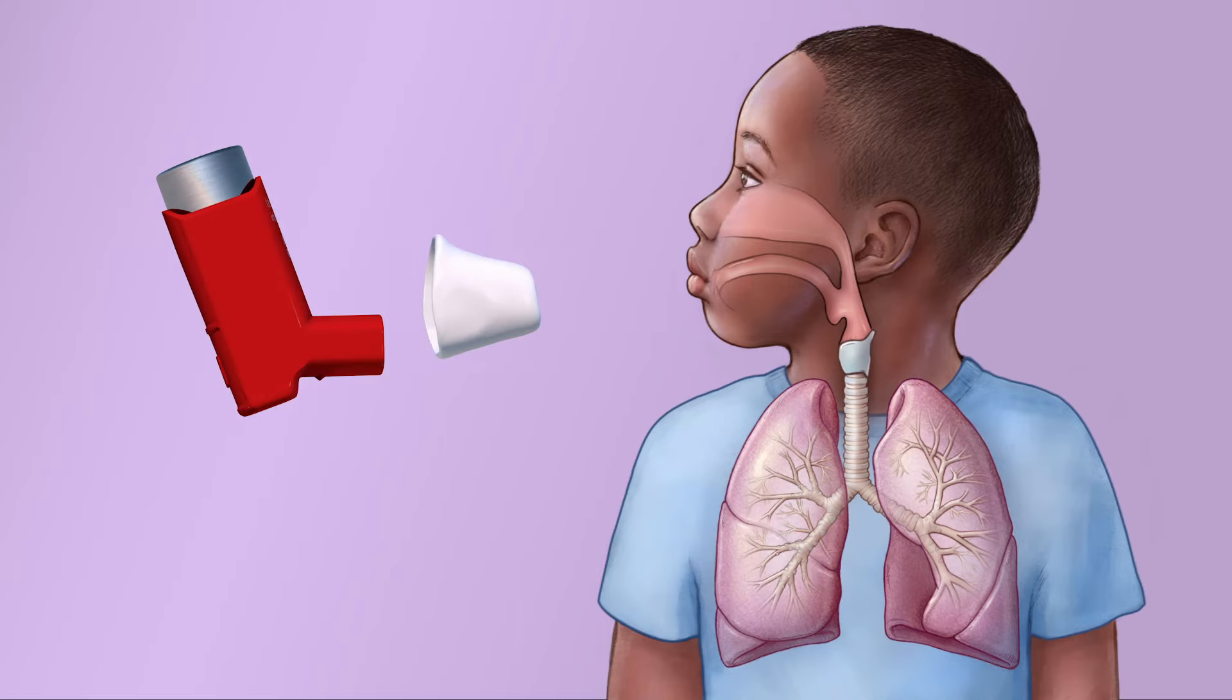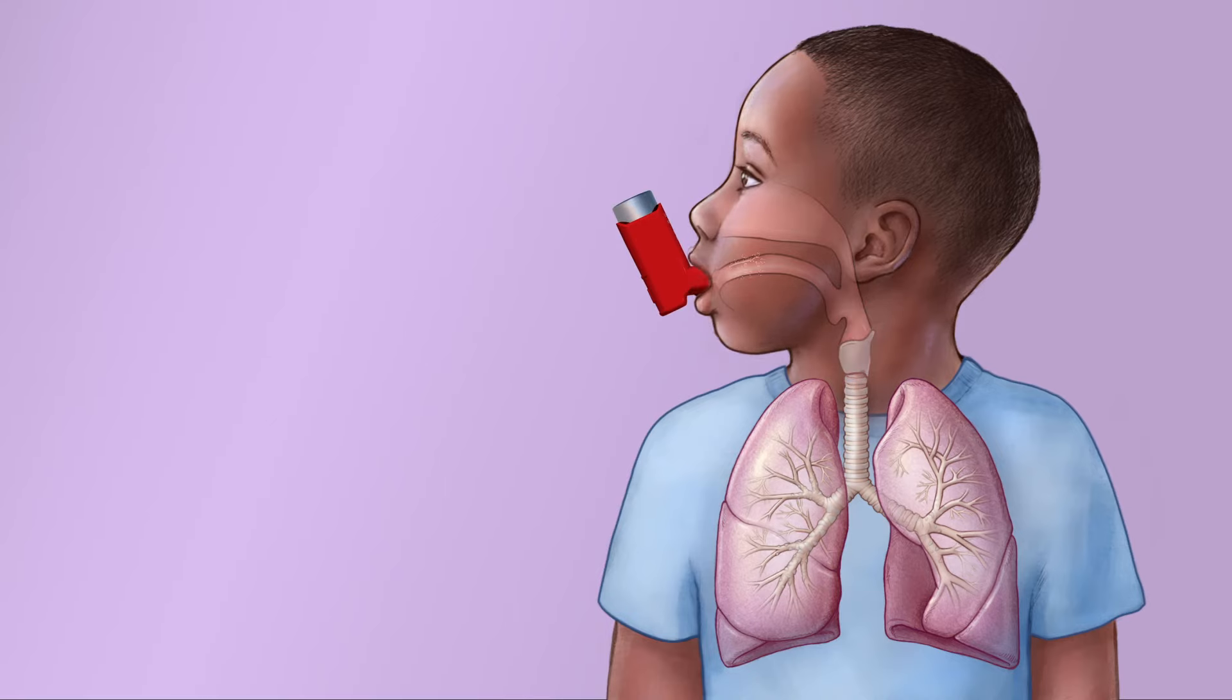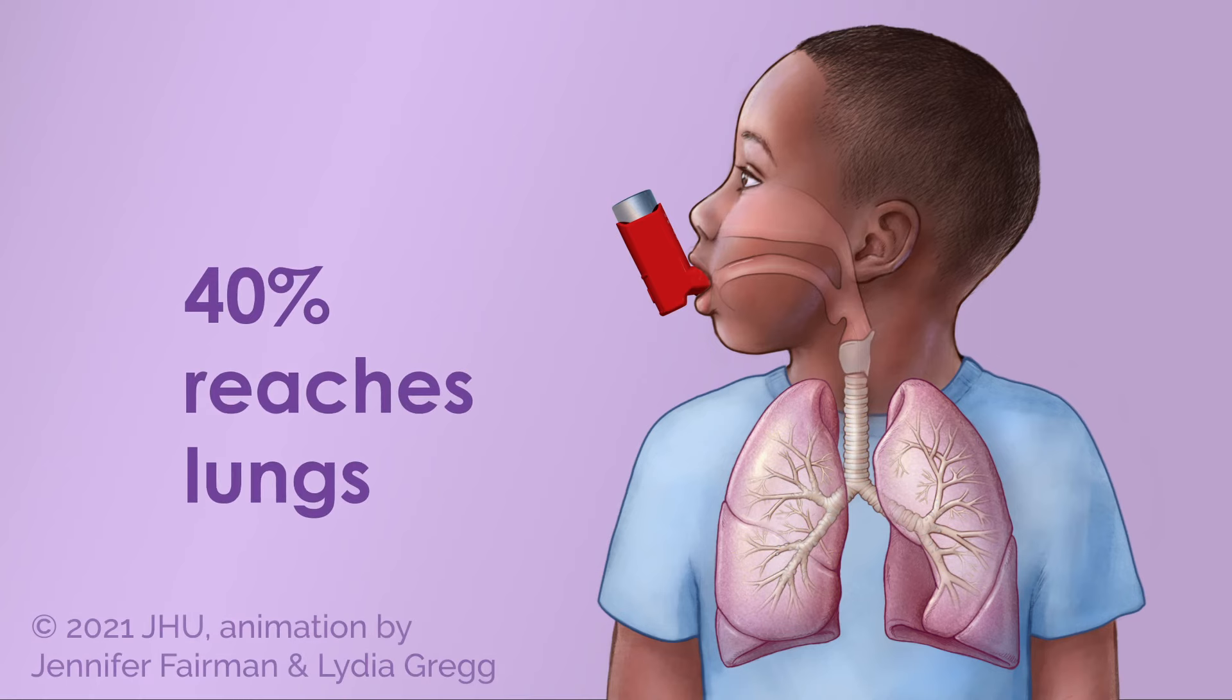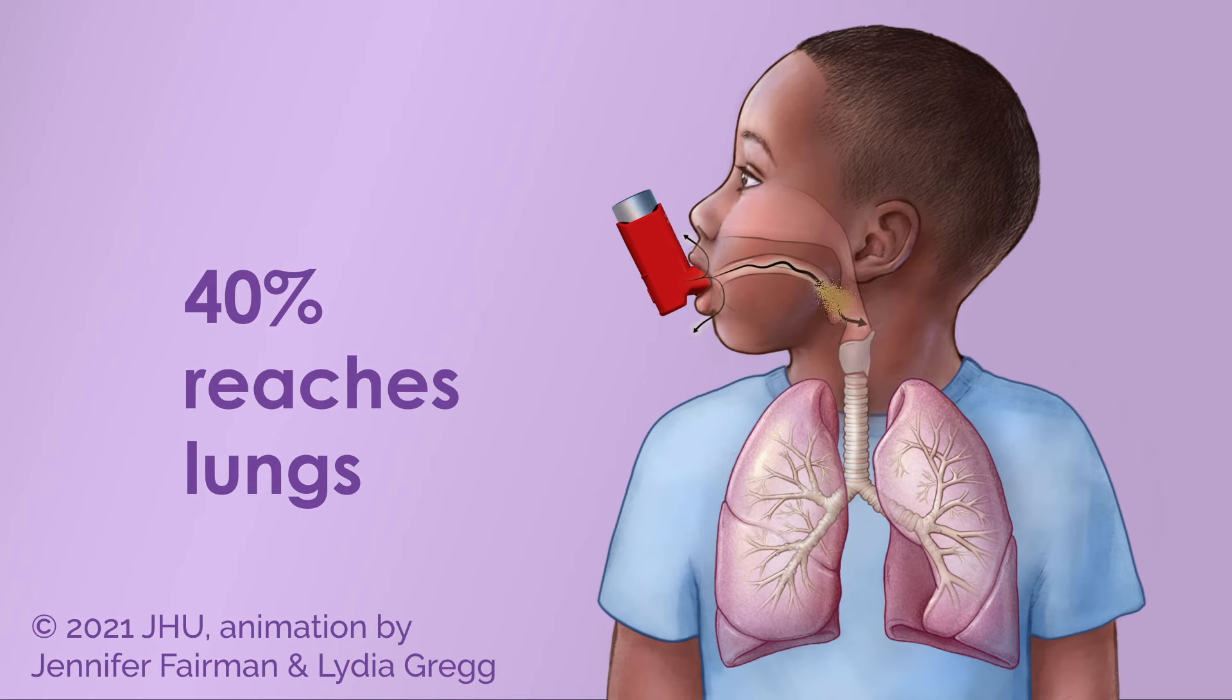When your child uses an inhaler by itself, the medicine is sprayed into their mouth. Some of the medicine gets caught in the mouth and the back of the throat, and the rest is inhaled into the bronchiole. This way, only about 40% of the medicine in a puff reaches the lungs.